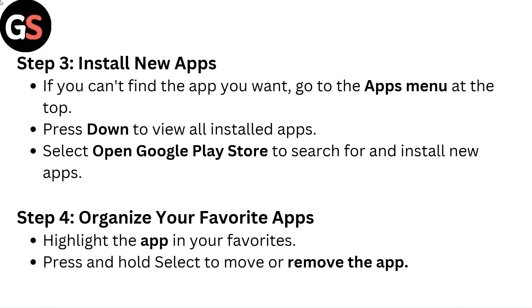Step 3: Install new apps. If you can't find the app you want, go to the apps menu at the top. Press down to view all installed apps. Select open Google Play Store to search for and install new apps.